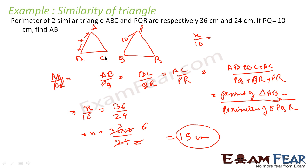To summarise: using the formula AB/PQ equals perimeter of triangle ABC divided by perimeter of triangle PQR, with AB equal to X, PQ equal to 10, perimeter of ABC equal to 36, and perimeter of PQR equal to 24, solving gives X equal to 15 cm.